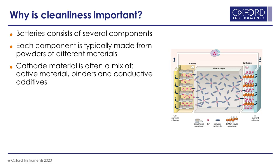As an example, the cathode material is often a mix of active material, binders, and conductive additives, and then being mixed with solvents before being attached to the conductive surface. So many powders being involved and many processing steps — it's quite easy to get impurities into the mixture, which could cause big problems.